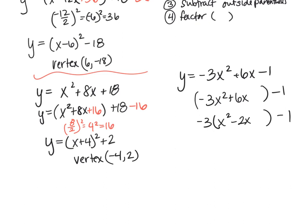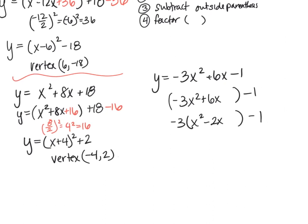Now, remember that because I'm multiplying by a negative 3, everything that I add inside the parentheses gets multiplied by that negative 3. So when I subtract that off, I'm going to have to multiply it by the 3. So let's complete the square. Negative 2 divided by 2 squared equals negative 1 squared, which is 1.